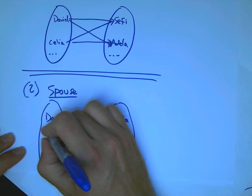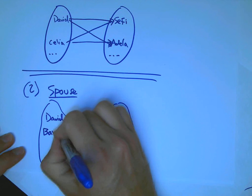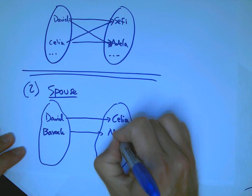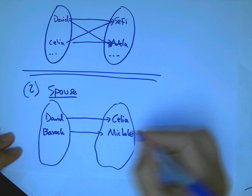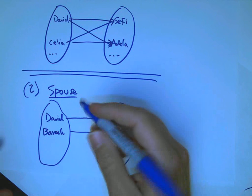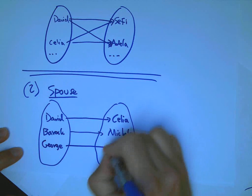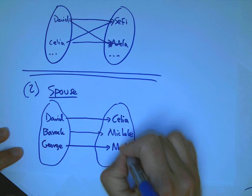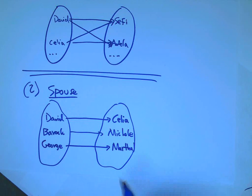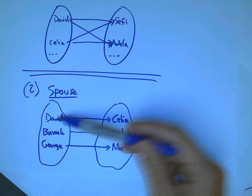And who is the spouse of Barack, let's say? That would be Michelle. Who is the spouse of George, going back to the first president? That would be Martha.